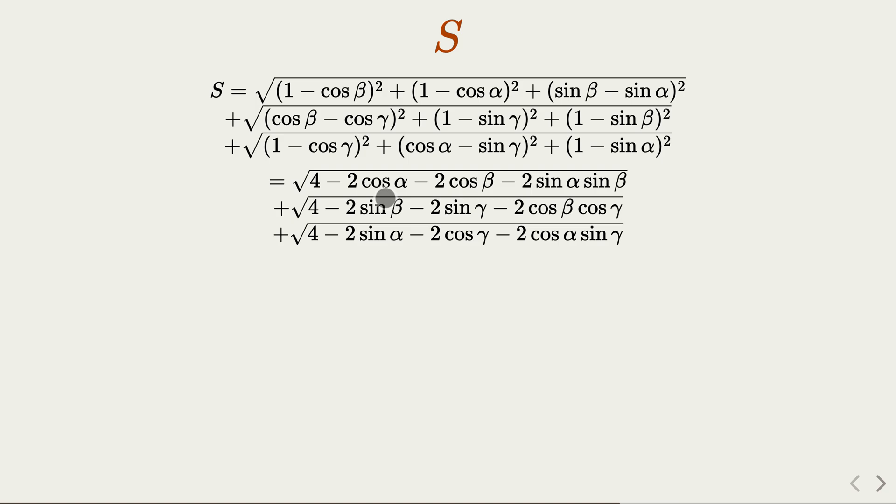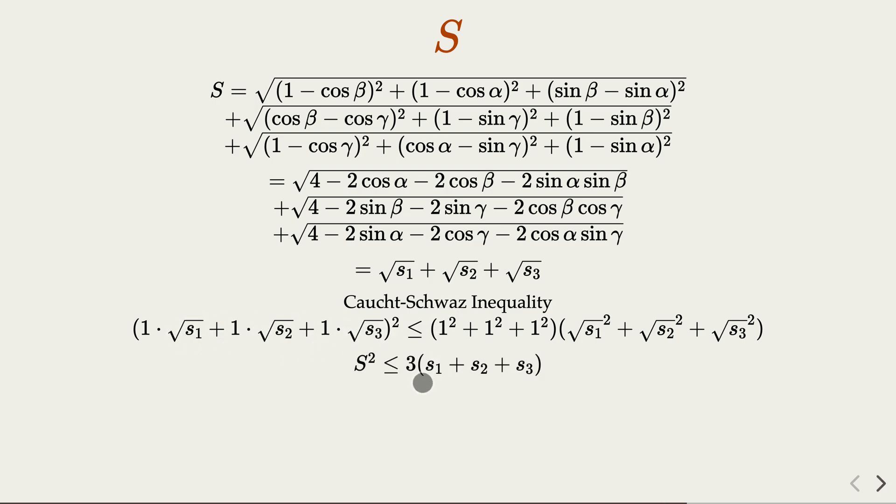We can do further analysis by using what is called Cauchy-Schwarz inequality. For an easier notation, we'll call this term s1, the second term s2, and s3. So what Cauchy-Schwarz inequality tells us in this case is that we're going to have 1, 1, 1 inner product here square is going to be less or equal to individual square, sum of square here. Notice that square root square and this square root goes away, simply become s1 plus s2 plus s3. This is 1 plus 1 plus 1, that's 3. So in other words, we have this.